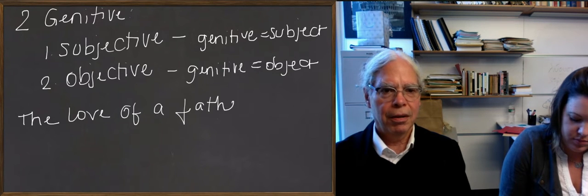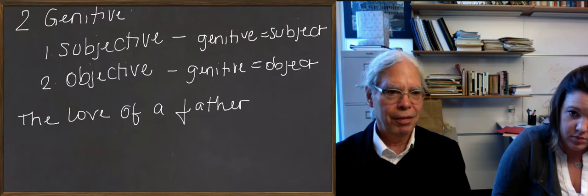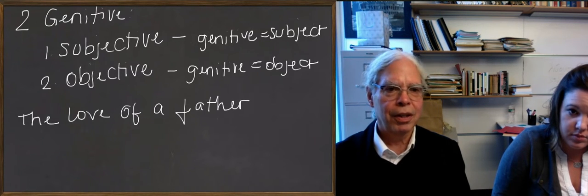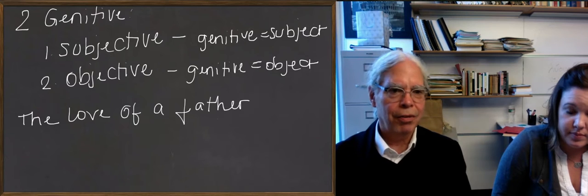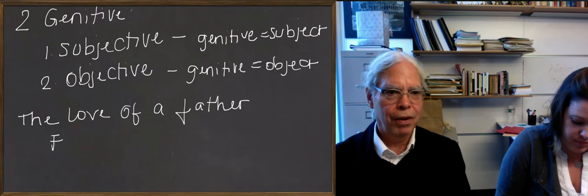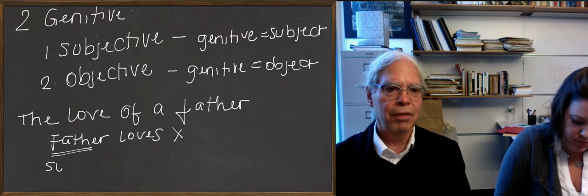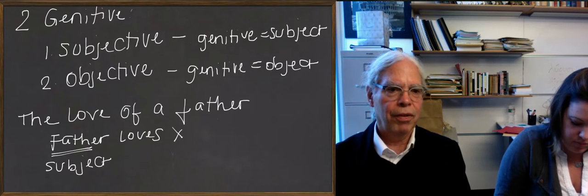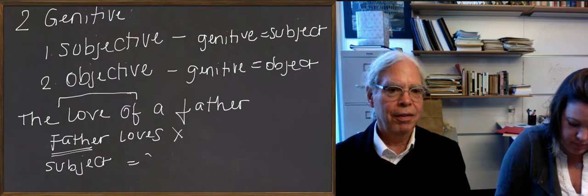It can be the father loves someone as the underlying sentence, in which case the noun father is the subject of the sentence. So I want you to write that down. The father loves X. That's a subjective genitive. So that's the father's love for somebody, right? The love of the father. The father loves X.